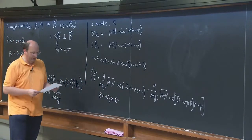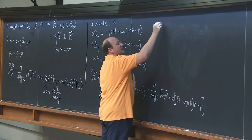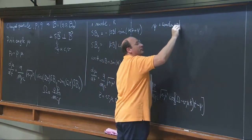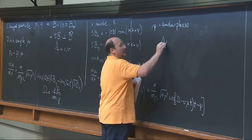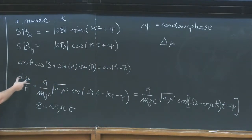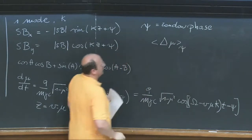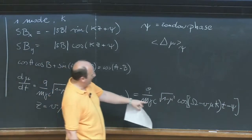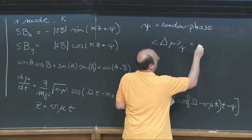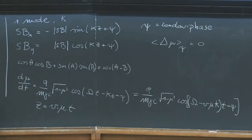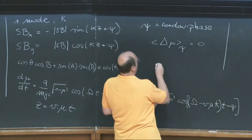I need to average over ψ, which is a random phase. If I just average it like that, I have an average over ψ of this cosine of ψ. Clearly, the average of the variation of the pitch angle is zero. That's not really what I'm after because this is a variation which has zero average—but what about the variance?